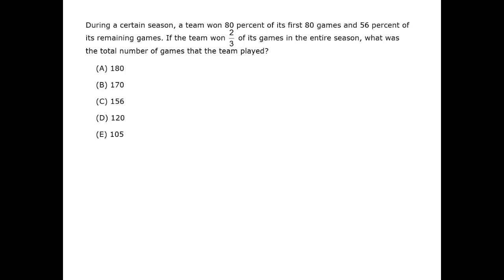We can calculate the number of wins overall. The term on the left represents the wins from the first 80 games. Then we have the wins from the 56 remaining games. The number of wins overall is two-thirds the total number of games in the season, which is 80 plus r.